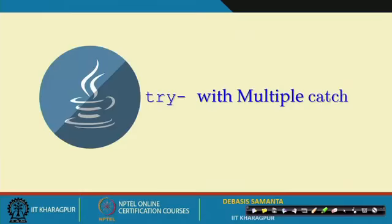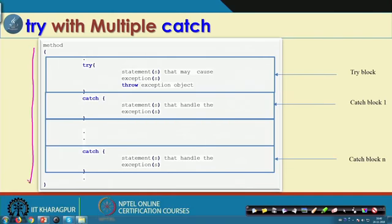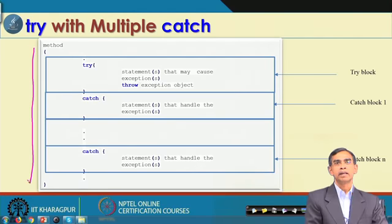Apart from the simple try-catch, there is also one more mechanism called try with multiple catch. The idea is basically within the method where we want to maintain exception handling. Try with multiple catch implies that there is only one try block and many catch blocks. If two or more catch blocks are there, it is called try with multiple catch.